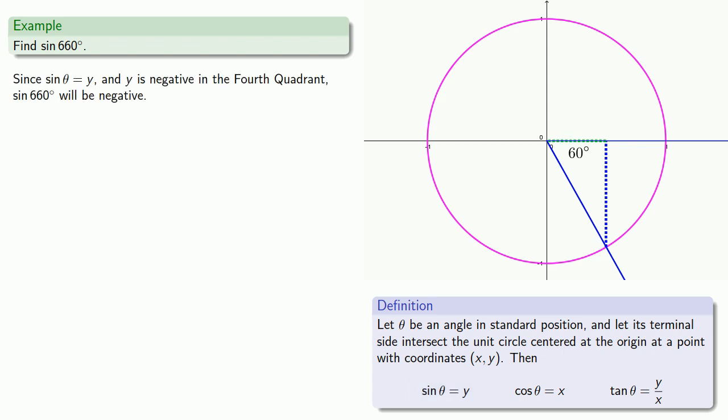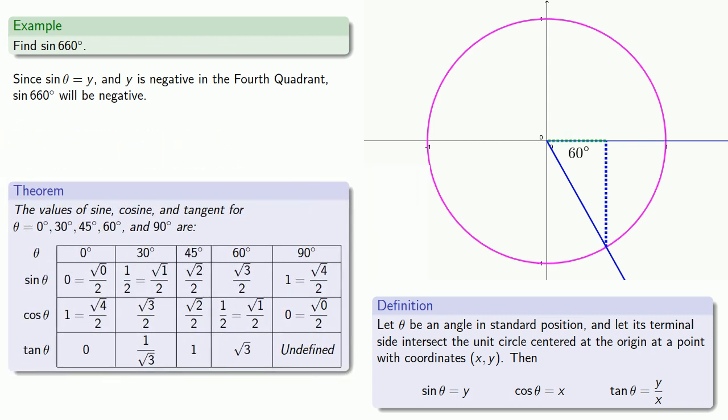So our reference angle 60 degrees has a sine of square root of 3 over 2, and so the sine of 660 degrees will be the negative of that value, minus square root of 3 over 2.